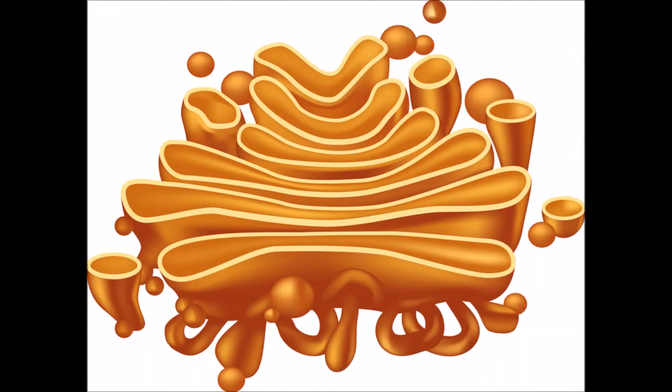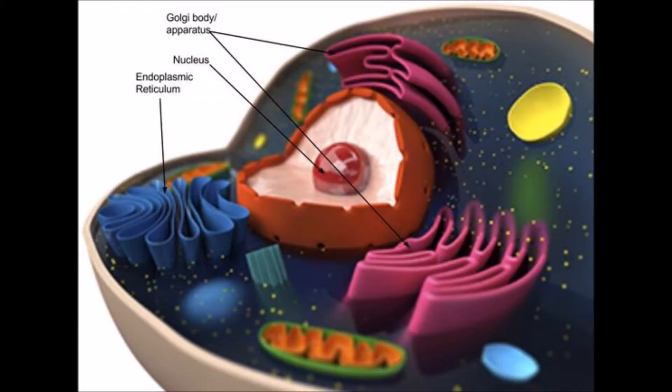The Golgi body is present in eukaryotic cells, which means cells that do have a nucleus, as opposed to prokaryotic cells, which do not have a true nucleus. The Golgi body is made up of one or more groups of flattened, membrane-bounded compartments, or sacs. The Golgi bodies are located very near the rough endoplasmic reticulum, and therefore near the nucleus.